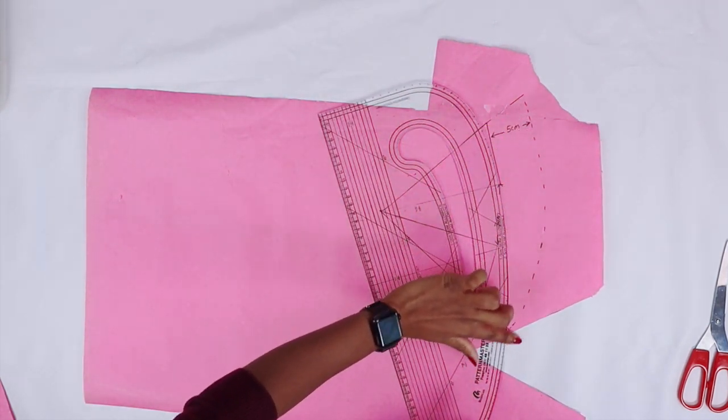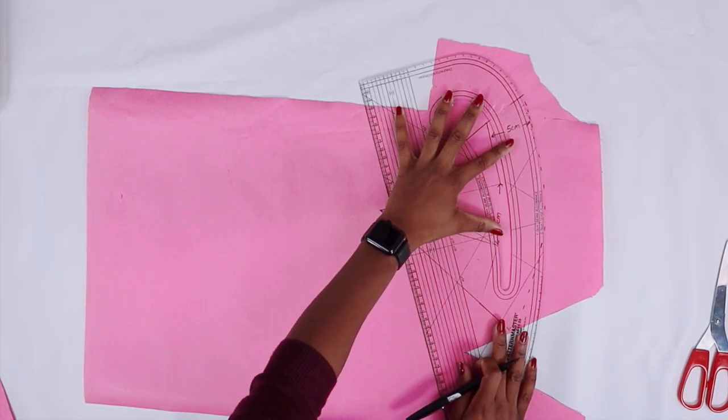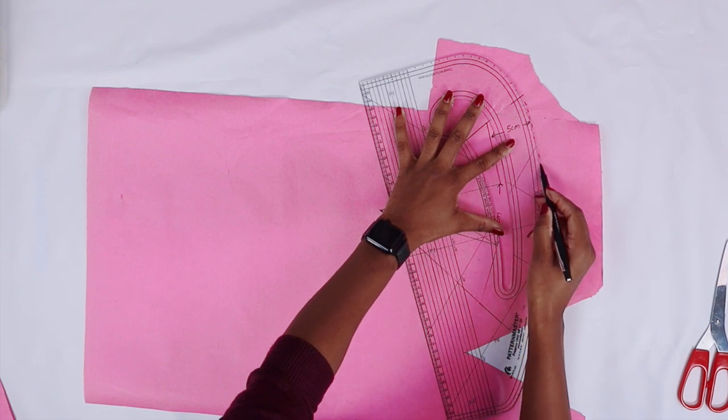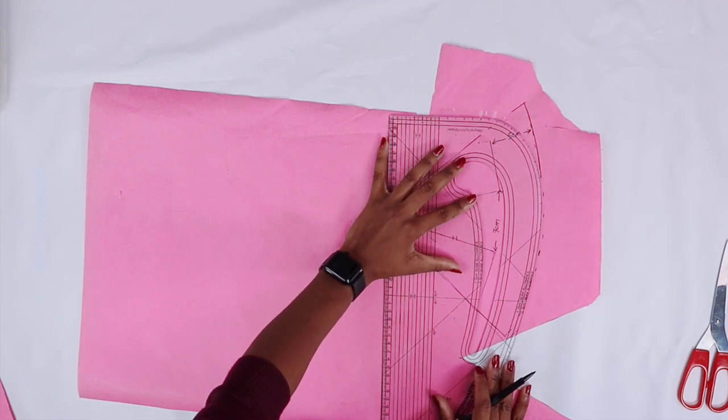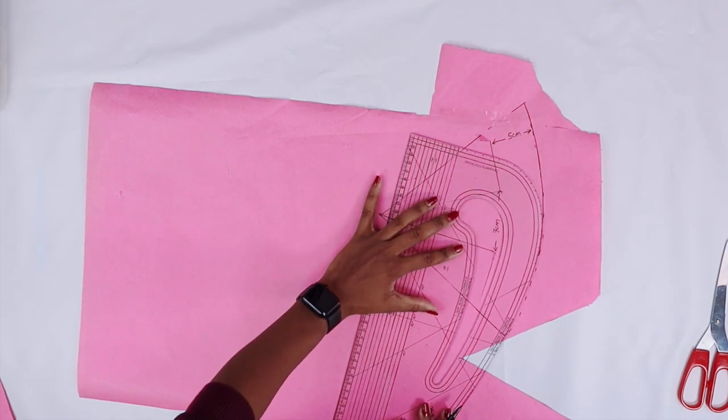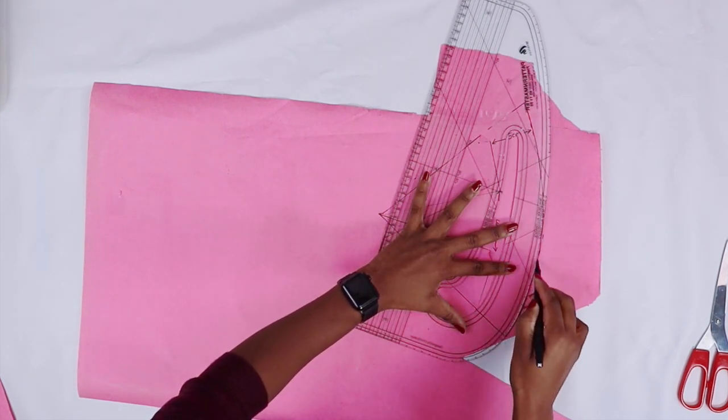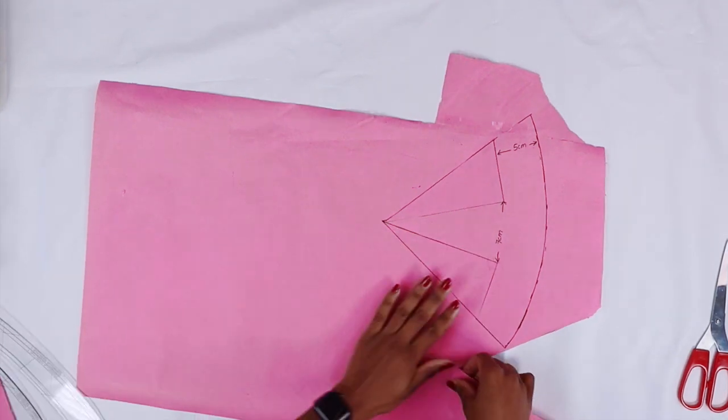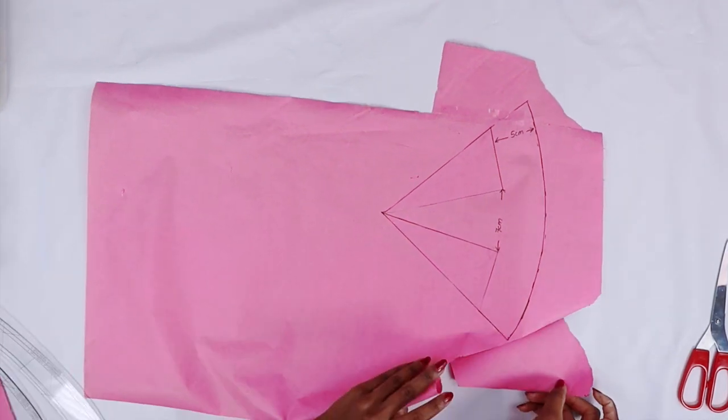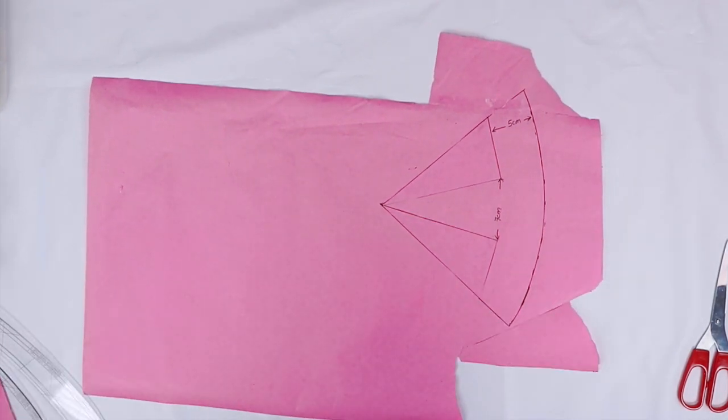So now we're just going to redraw the shape. Find a good position with your ruler. Again, I have to stick some paper.